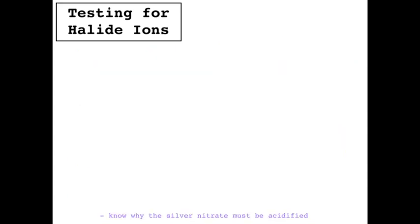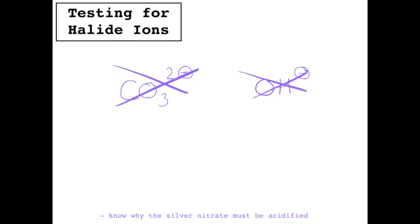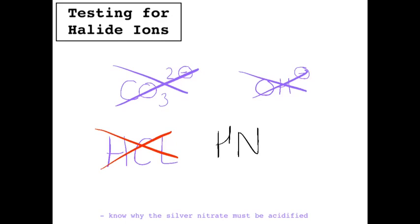Sometimes an exam will ask why acidified silver nitrate is used. We acidify it to get rid of any ions that may interfere with the test — for example, carbonate ions CO₃²⁻ or hydroxide ions OH⁻, which would react with silver nitrate to create a precipitate as well. We acidify with nitric acid. We do not use hydrochloric acid because the chloride ions would react with the silver nitrate and make a white precipitate. Nitric acid is used because there's nothing in it that will interfere with the test.